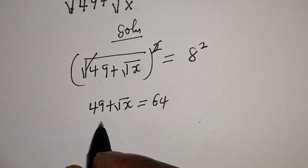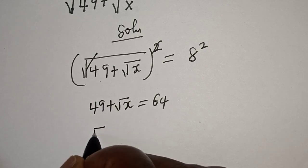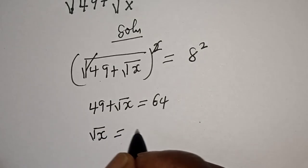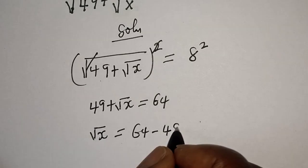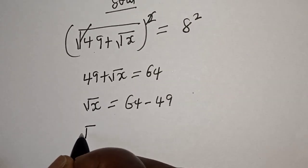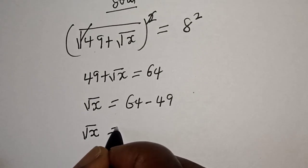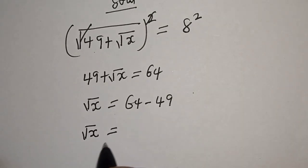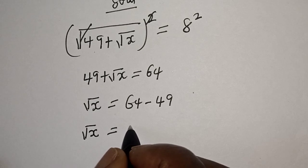Then, this is square root of S is equal to 64 minus 49. Square root of S is equal to 64 minus 49. This is 15.